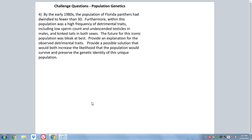Provide an explanation for the observed detrimental traits. In other words, why are we seeing these detrimental traits emerge? And provide a possible solution that would increase the likelihood that the population would rebound and preserve the genetic identity of this unique population. So, essentially, what we're getting at in the first part is that we had a bottleneck. That's really what happened here. There was a very large population of panthers when they were inhabiting their natural habitat. But, as the question says, for various reasons, their population number dwindled all the way down to 30. That's a bottleneck.